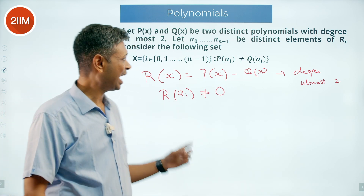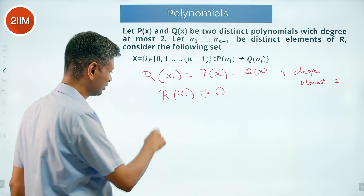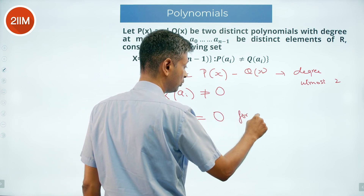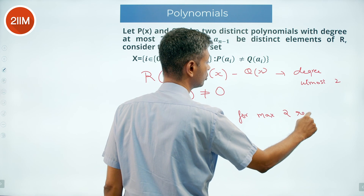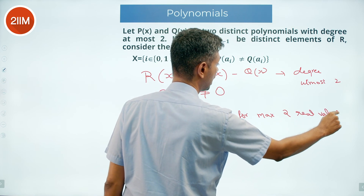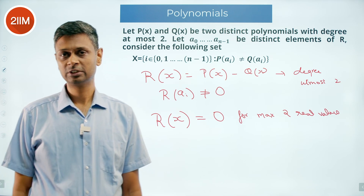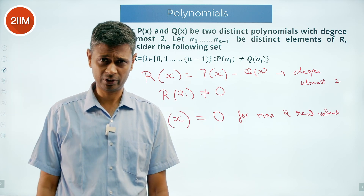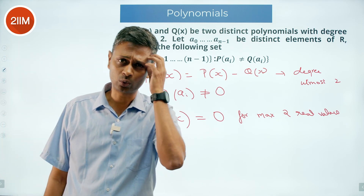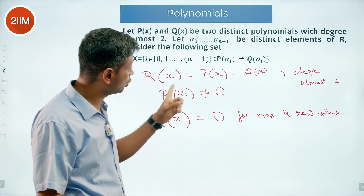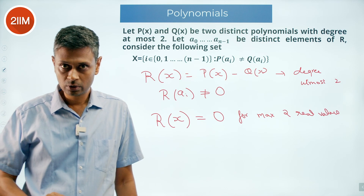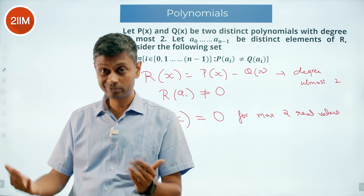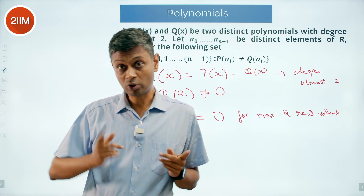Now comes the mind-blowing part. R(x) is at most a quadratic polynomial, so R(x) = 0 has at most two real roots. It is not a cubic or higher degree. Therefore, P(aᵢ) = Q(aᵢ) — equivalently R(aᵢ) = 0 — is possible for a maximum of two values of i. So at most two of the n elements can be excluded from X.